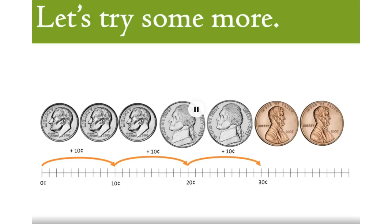Moving to nickels. Adding on 5 cents. 35 and 40 cents. And last, we will add pennies. 1 penny or 1 cent each. 41 cents and 42 cents. These coins have a total of 42 cents.